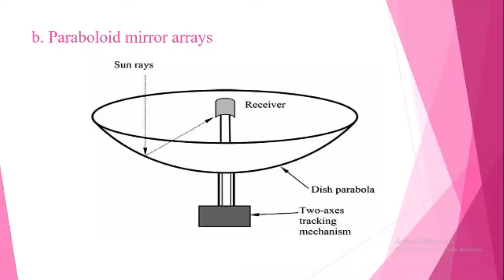In these collectors, the receiver is placed at the focal point of the concentrator. A typical paraboloid dish collector has a dish of six-meter diameter made up of 200 curved mirror segments forming a paraboloid surface. The solar beam radiations are focused at a point where the receiver or absorber is placed.